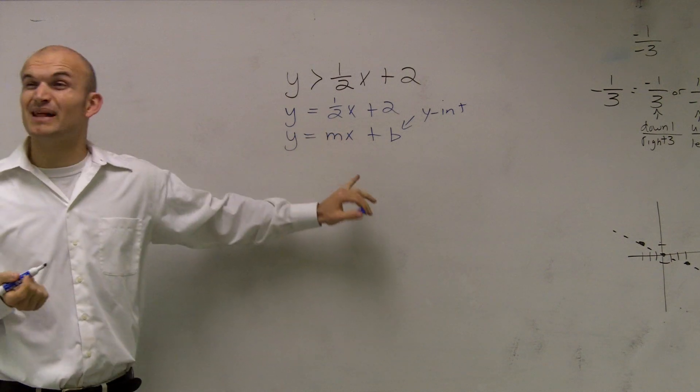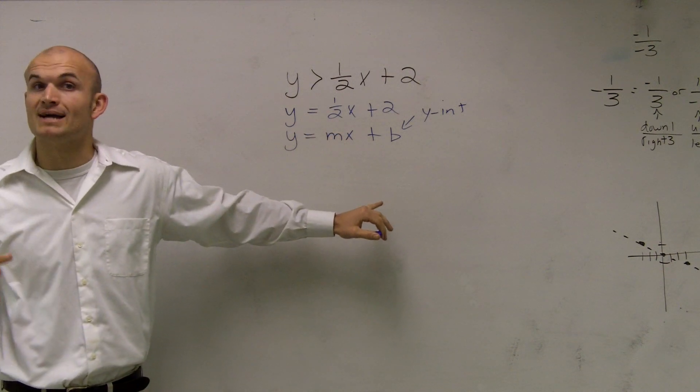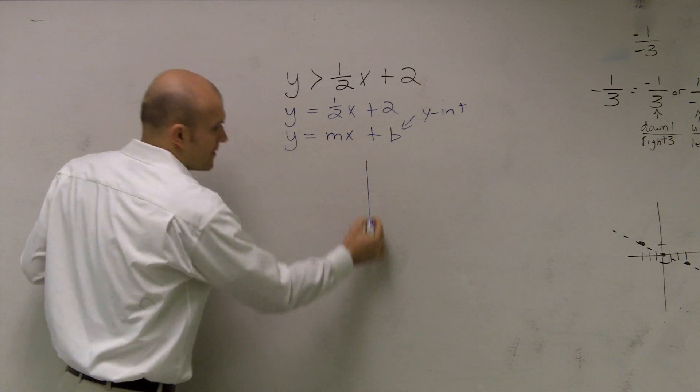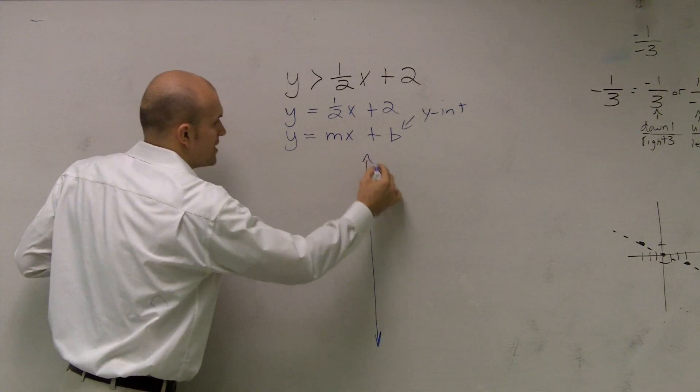b was our y-intercept. Remember, that tells us where the graph crosses the y-axis. So on your graph, this should be the first thing that you guys want to apply.